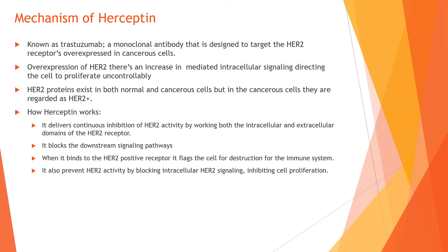Herceptin is a monoclonal antibody that is designed to target the HER2 receptors that are overexpressed in cancerous cells. This overexpression increases mediated intracellular signaling, directing the cell to proliferate uncontrollably. It's important to note that HER2 proteins exist in both normal and cancerous cells — it's just that there's a large quantity of them in cancerous cells, and they're typically regarded as HER2 positive.